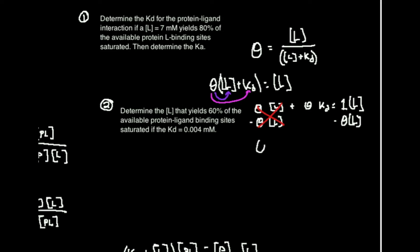Ultimately what I'm left with there is theta times Kd is equal to concentration of L, and notice that both of these terms 1 and theta have L, so I factor out the L, and I have 1 minus theta.